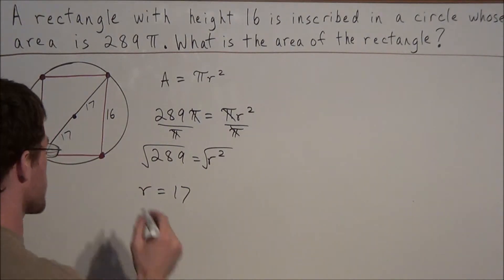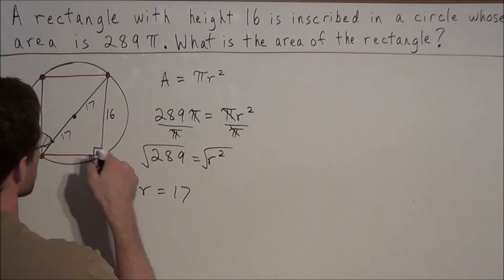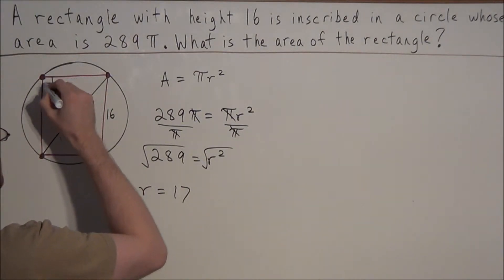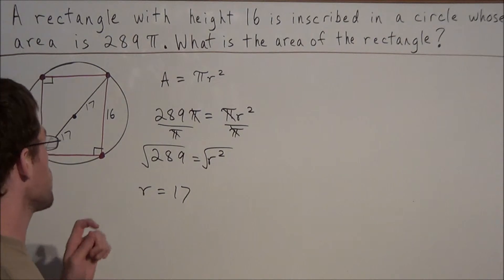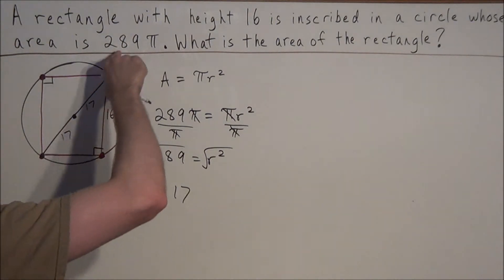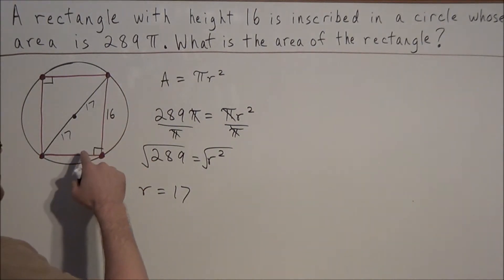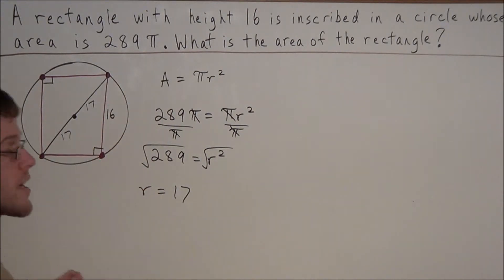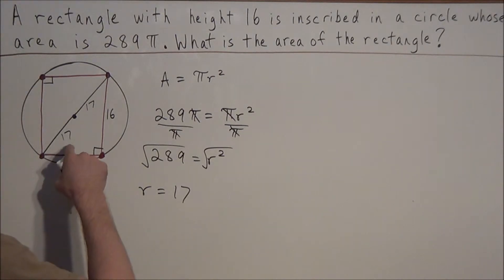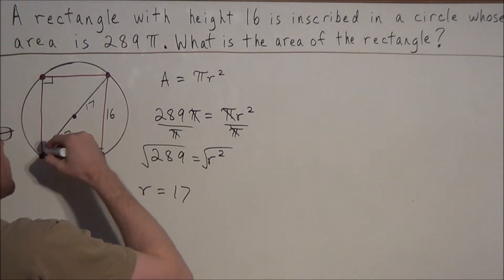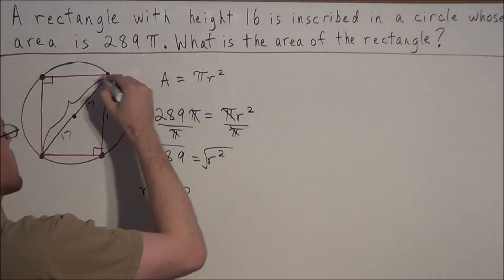And because we have a rectangle, we know that we have four right angles. So one thing to note is that the diameter of the circle will represent the hypotenuse of this right triangle. And if we want to find the length of the hypotenuse, all we need to do is add up the two radii. So 17 plus 17 will give us 34.